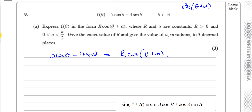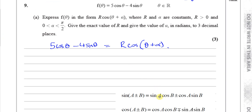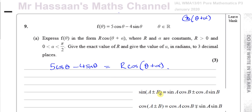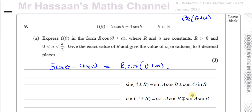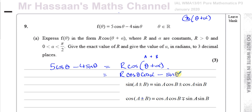In order to expand this, we need to use the compound angle formulae — sometimes called the addition formulae — which are found in the P3-4 formula book. We need the one for cos(A + B), because this is cosine of something plus something. In our case A is θ and B is α. Expanding: cos(A + B) = cosA·cosB − sinA·sinB. So r·cos(θ + α) becomes r·cosθ·cosα − r·sinθ·sinα.